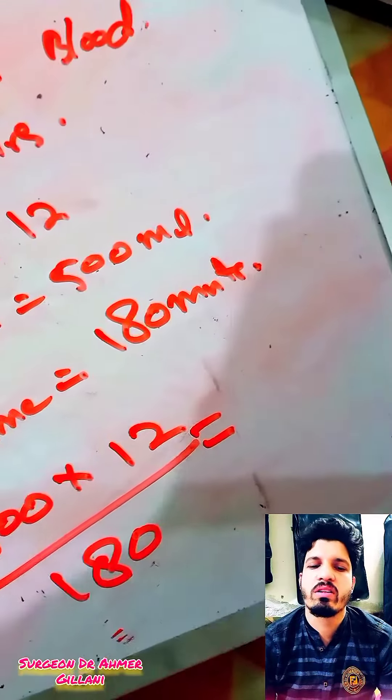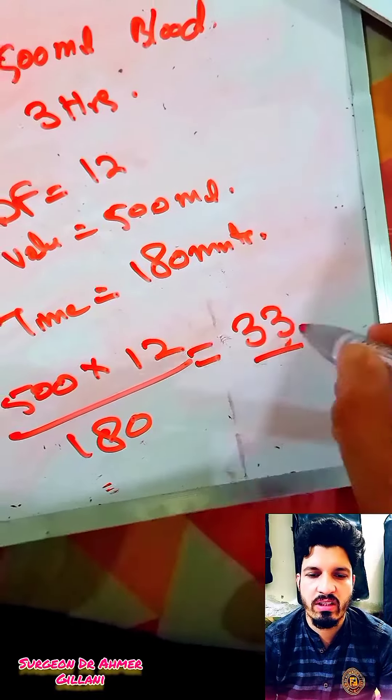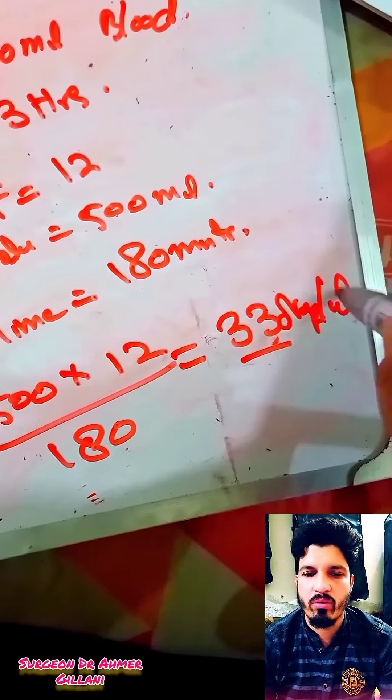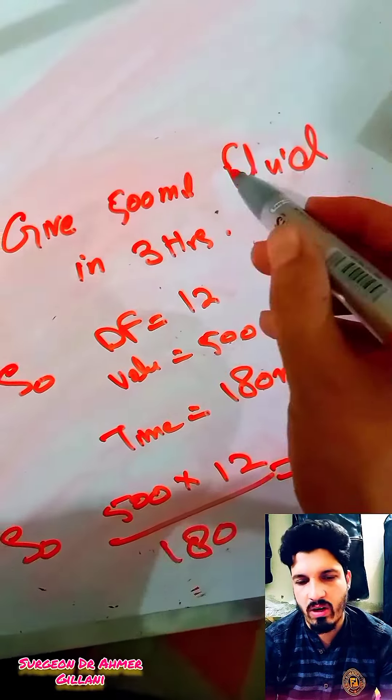So you have to give 33 drops per minute to give blood in three hours, 500 ml quantity.